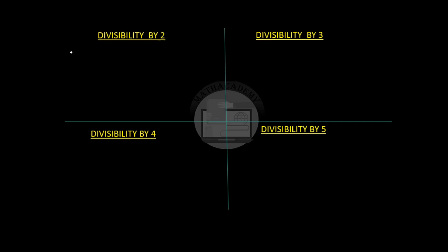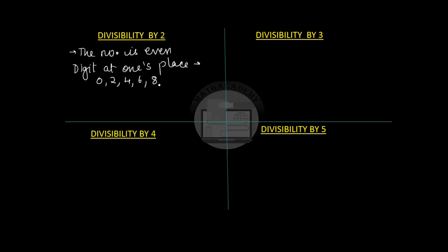The divisibility test by 2 says that any number is divisible by 2 if the number is even. A number is even when the last digit, or the digit at the ones place, is either 0, 2, 4, 6, or 8. For example, 3818 — the last digit is 8, so it is divisible by 2. Similarly, 100 and 1994 are all divisible by 2.